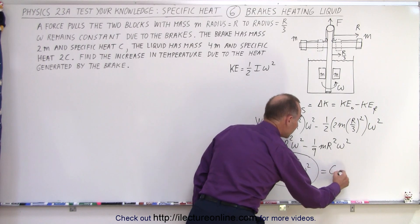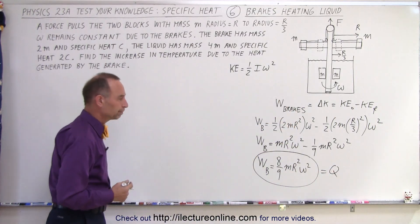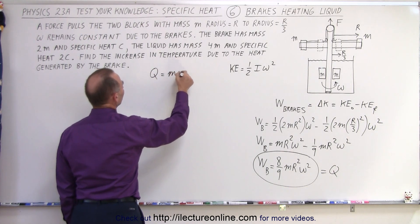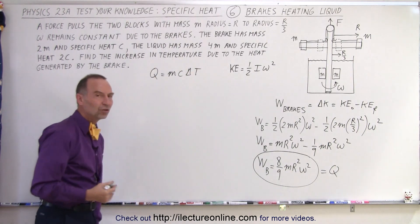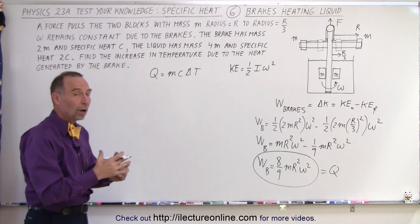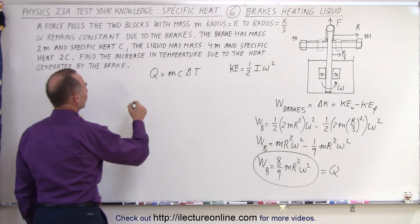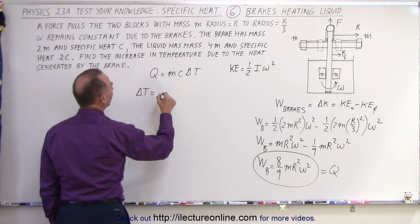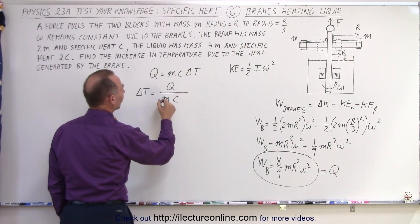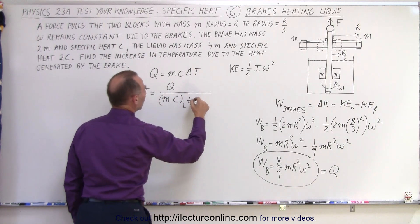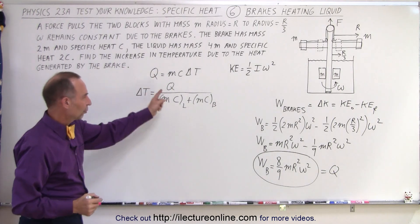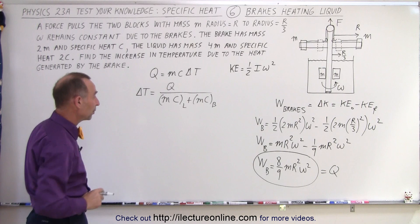So then we use the equation that Q, the heat added, is equal to MC delta T. That's of course the general equation. But here, of course, we have two things that are heating up, both the brakes and the water. They have different masses and different specific heats. So we can say that the delta T is equal to Q divided by M times C. But of course, we have to have this for both the liquid and the M times C of the brakes. And the Q is the same as the work done by the brakes. And now I think we have an equation to come up with the change in the temperature.